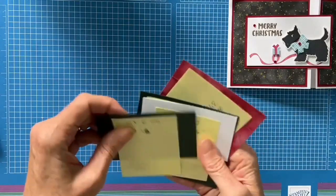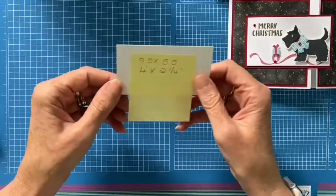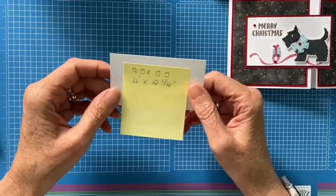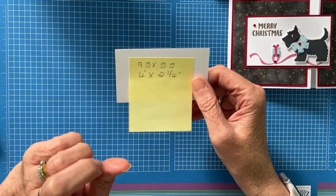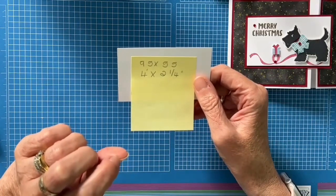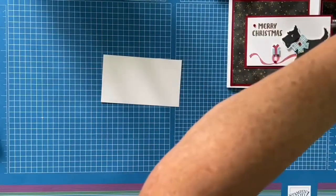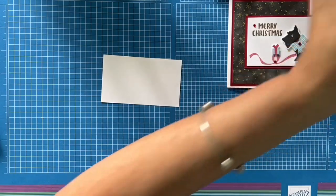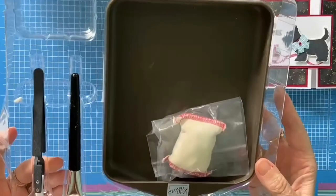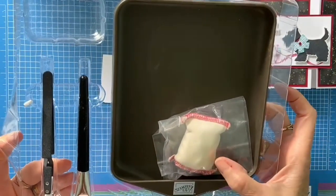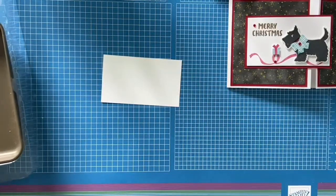So for your stamping you will need a piece of basic white card and that measures 9.5 by 5.5cm and that is 4 by 2 and a quarter inches. Now another thing that is new in the mini catalogue is this lovely embossing tool set. So you get the tray, the crafting body, the brush and tweezers. So I am going to be doing a little bit of embossing.